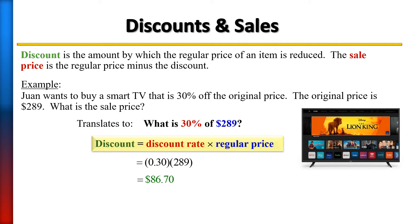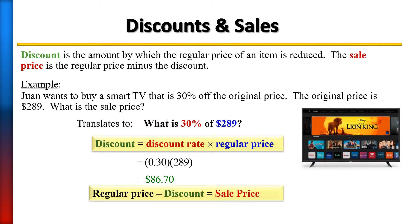You should have gotten $86.70 as the discount. Now subtract that discount from the original price to get the sale price. So the sale price of the TV is $202.30.